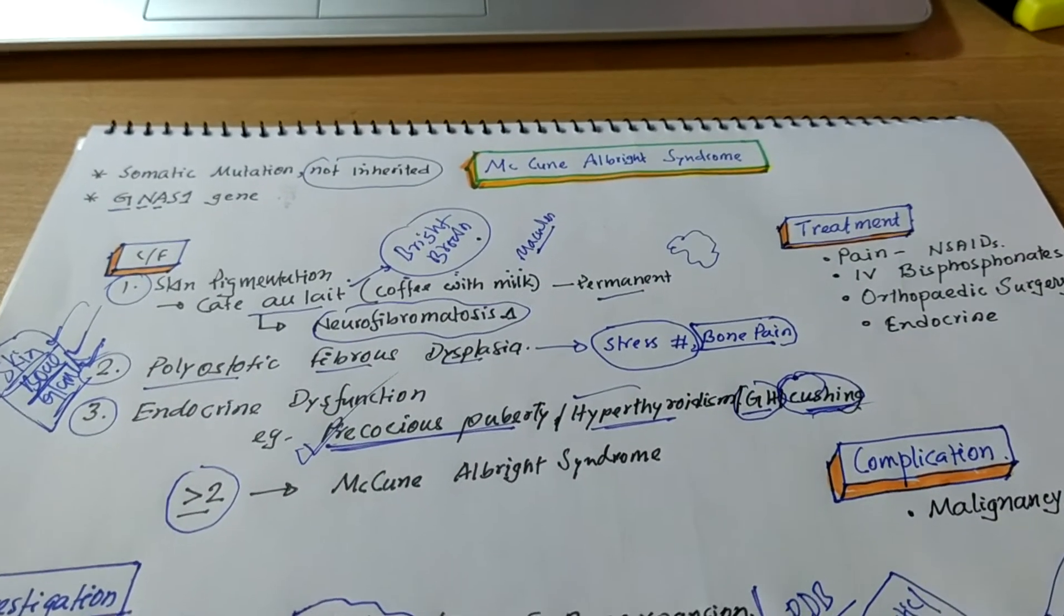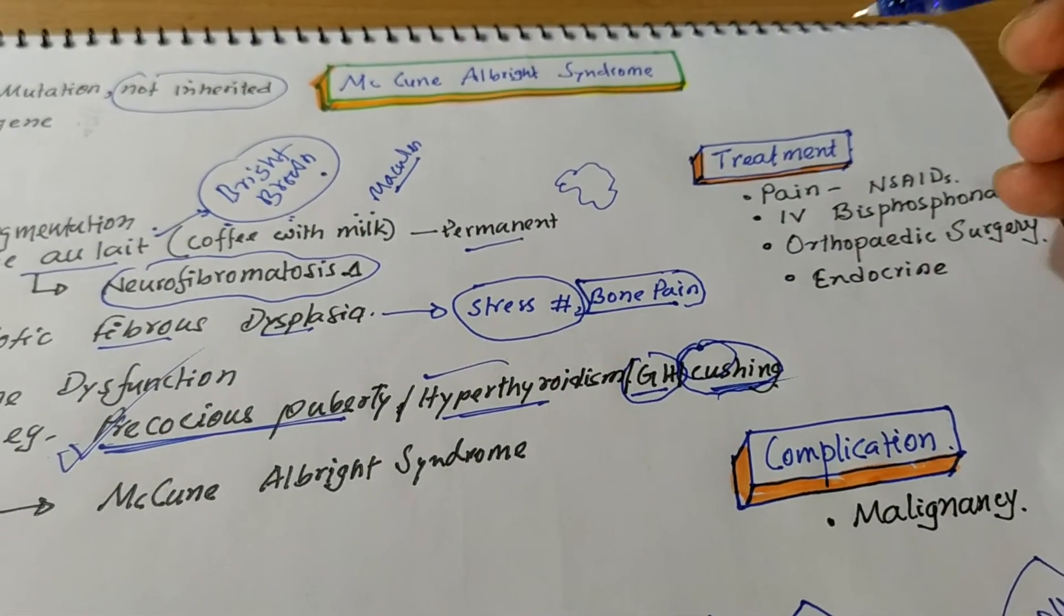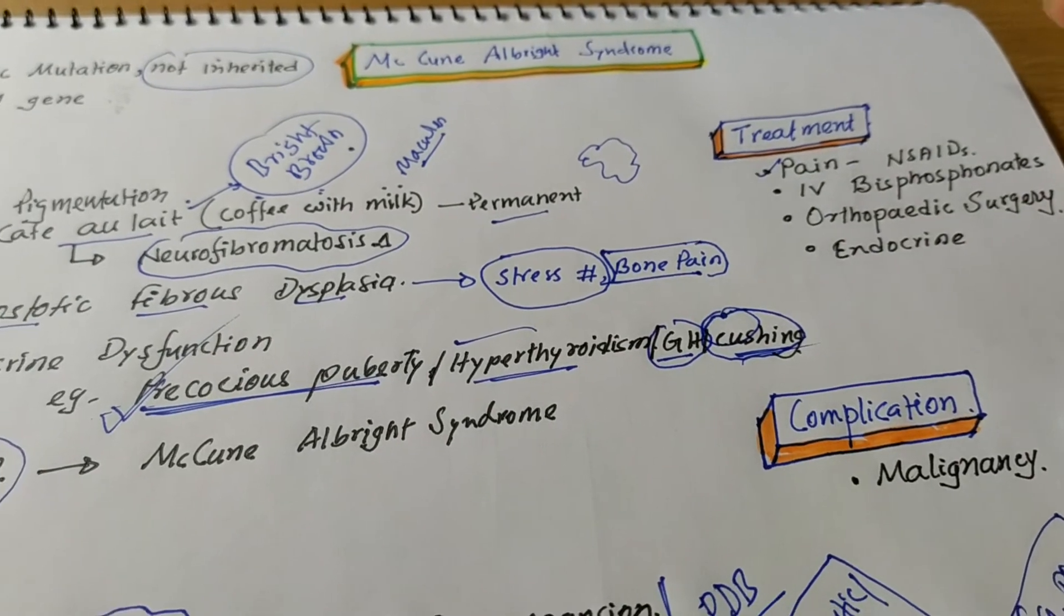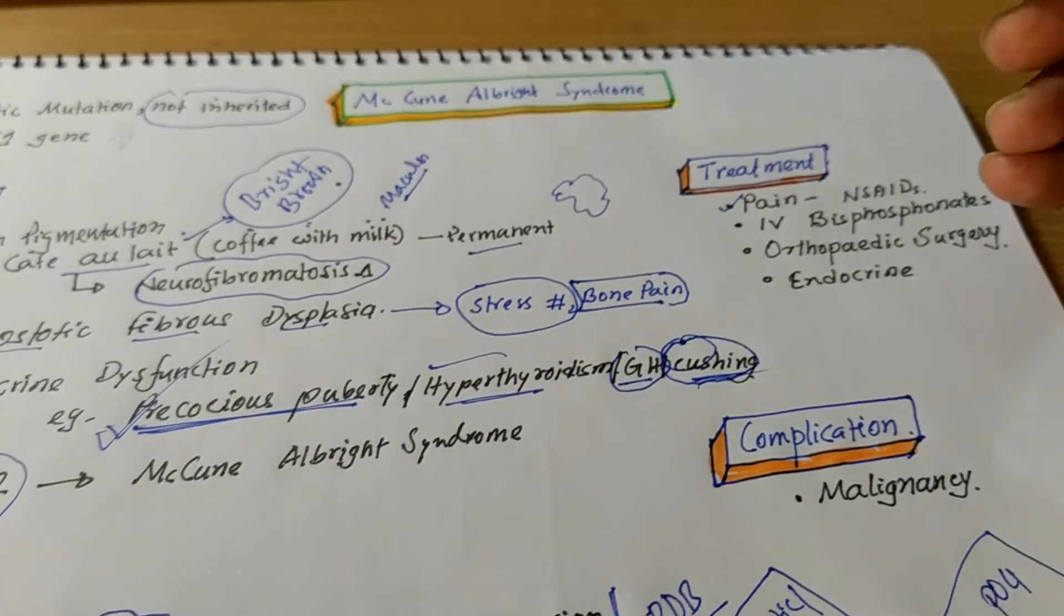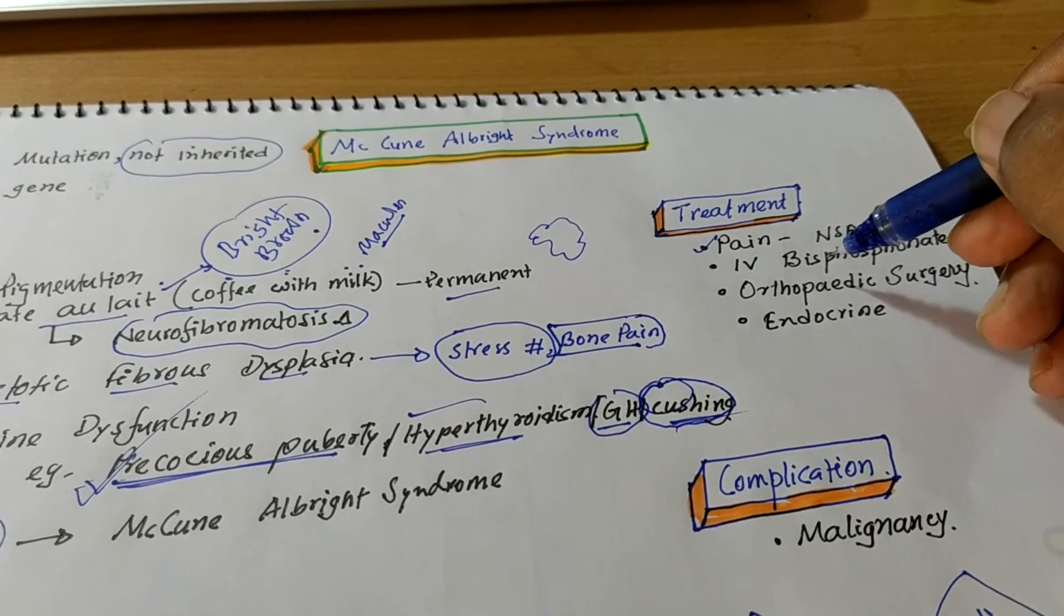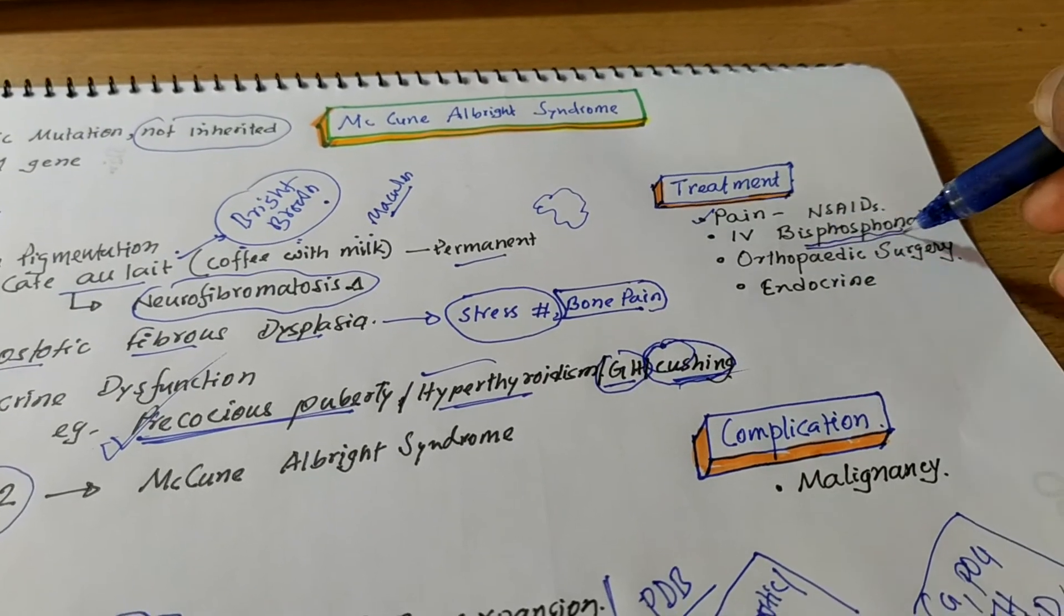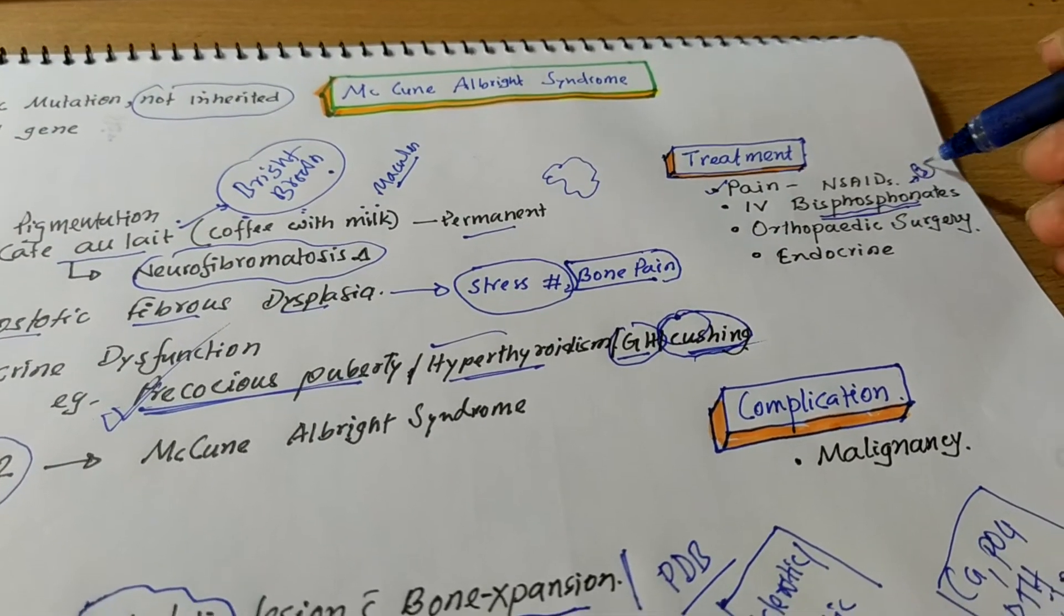Now, how will you treat the McCune-Albright syndrome? The treatment should be at first the management of pain by analgesic or narcotics may be used. And most important, treatment of choice is intravenous bisphosphonate. And this should be continued lifelong. Usually, it is given 3 to 6 month interval.